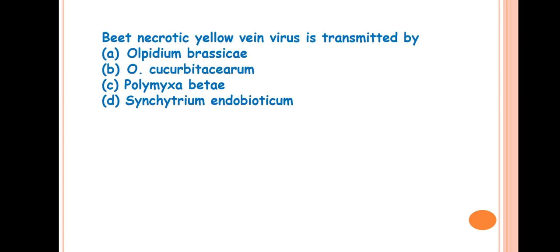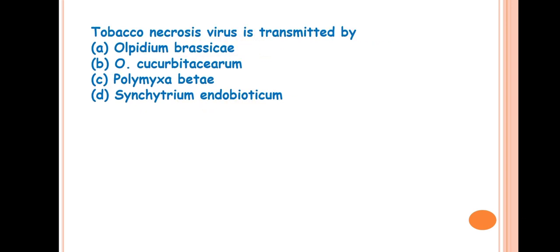Next question is, beet necrotic yellow vein virus is transmitted by? Answer is Polymyxa betae. This is a fungus which transmits the beet necrotic yellow vein virus.